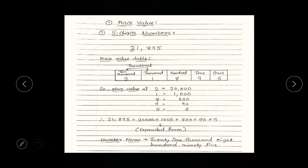As you all can see, 5 is at 1's, 9 is at 10's, 8 is at 100, 1 is at 1000, and 2 is at 10,000. And this, 1000 and 10,000 are grouped together and known as thousands.